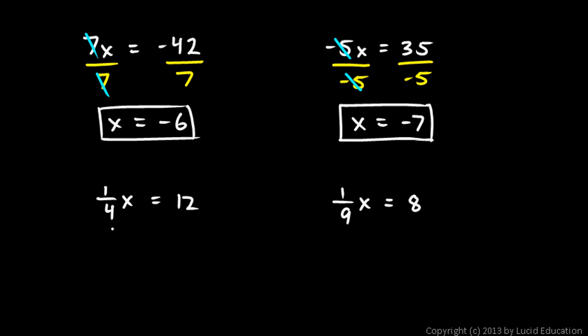Over here, 1 fourth times x equals 12. I want to get x by itself. I'm trying to solve for x. So I need to get rid of the 1 fourth. And I can get rid of the 1 fourth by multiplying by 4. And if I multiply by 4 on the left, I multiply by 4 on the right. And on the left, the 4 and the 4th cancel out. That's just equal to 1. 4 times a fourth is 1. So on the left, I have 1x. And you don't even need to write the 1. Just write x equals 12 times 4, which is 48.